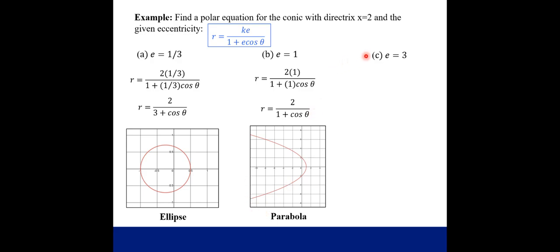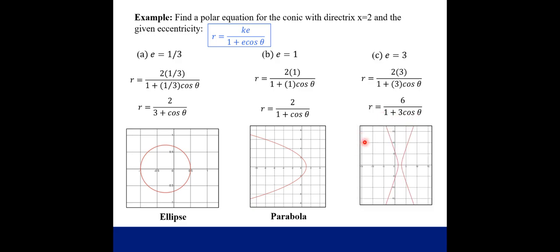And then the last one, eccentricity 3, plugging that into our formula, we have the simplified version, r equals 6 over 1 plus 3 cosine theta, and that is a hyperbola.